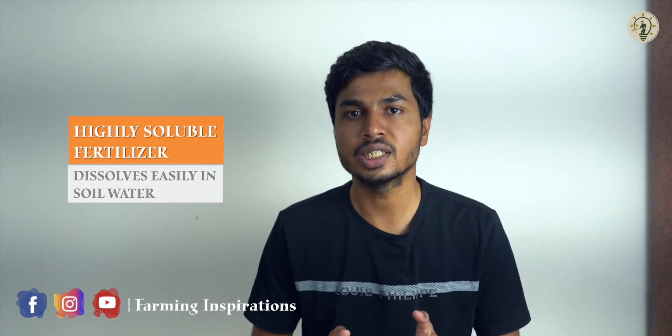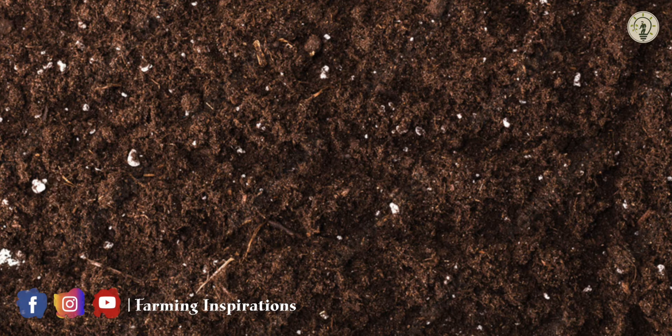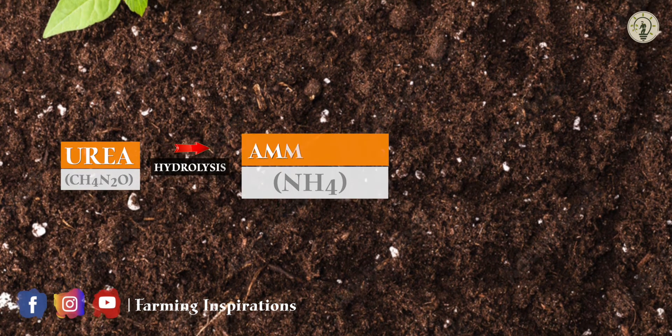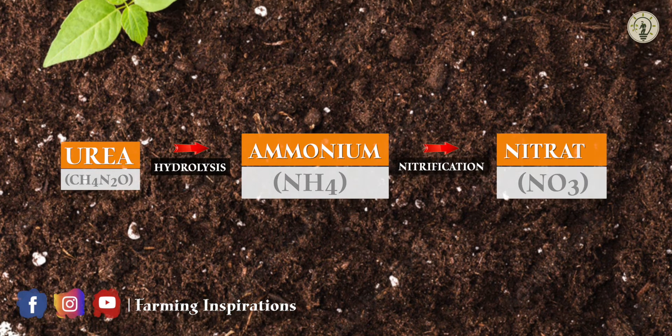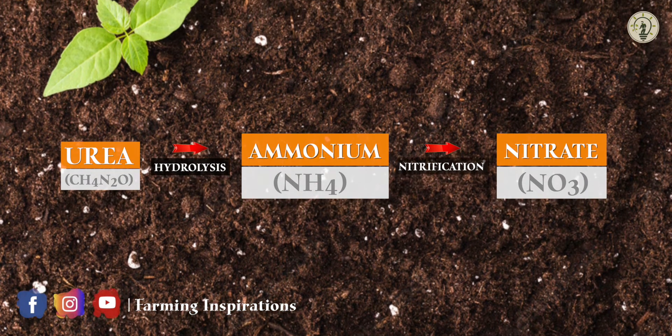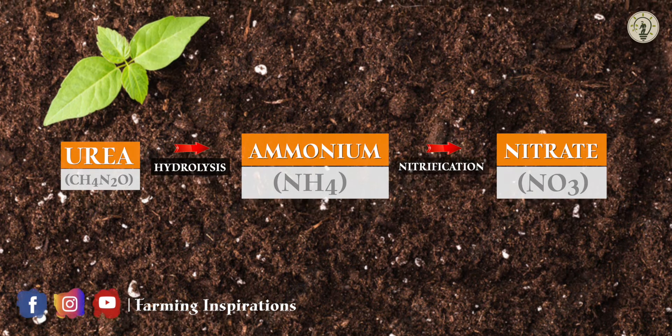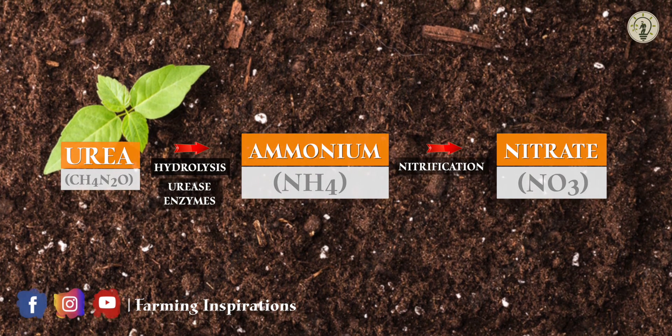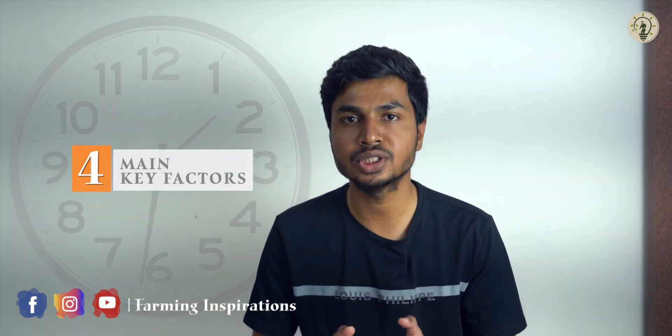Urea is a highly soluble fertilizer that dissolves easily in soil water. Whenever urea is applied to the soil, it undergoes hydrolysis followed by nitrification — a process in which urea is converted into ammonium by urease enzymes, and then to nitrate by nitrifying soil microorganisms. The rate at which urea is converted into nitrate in soil for plant uptake depends on four main key factors.